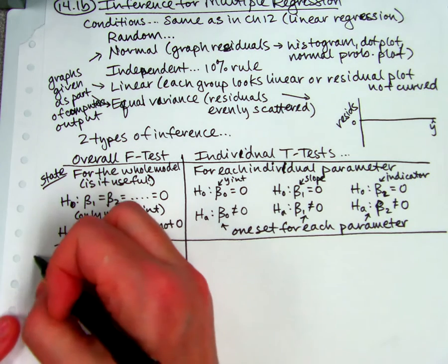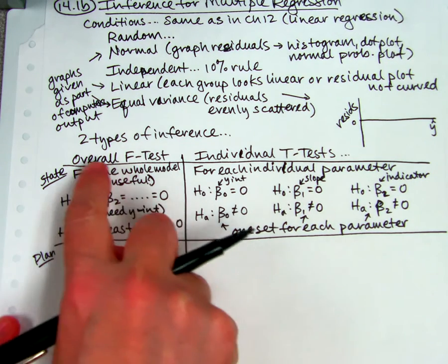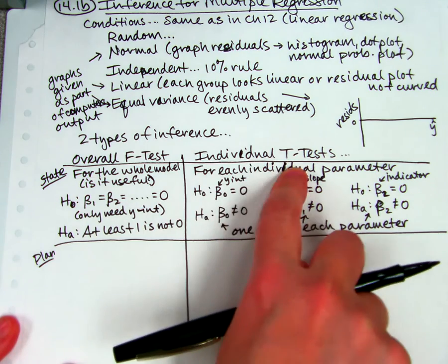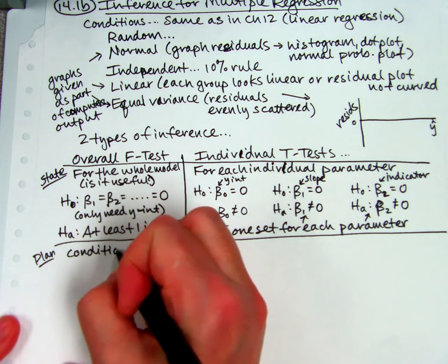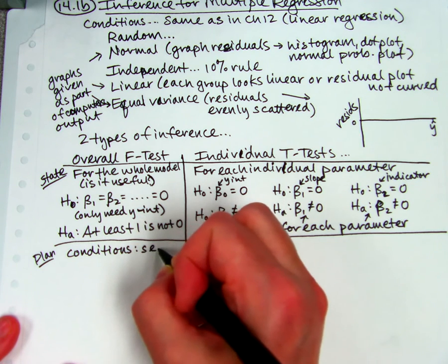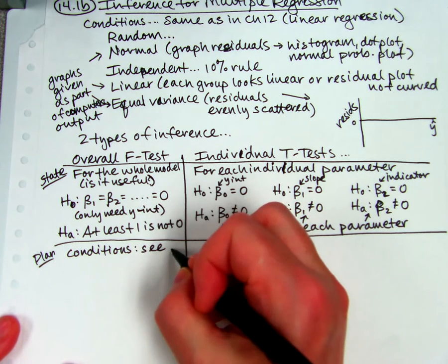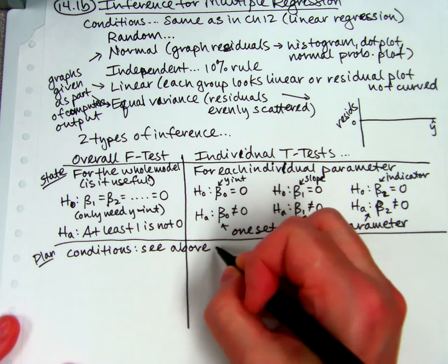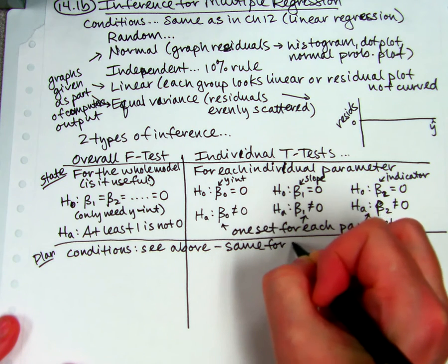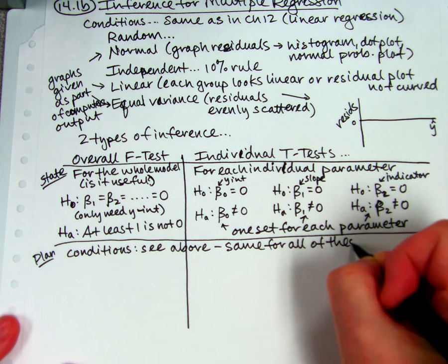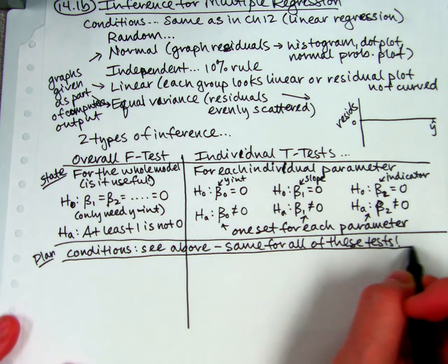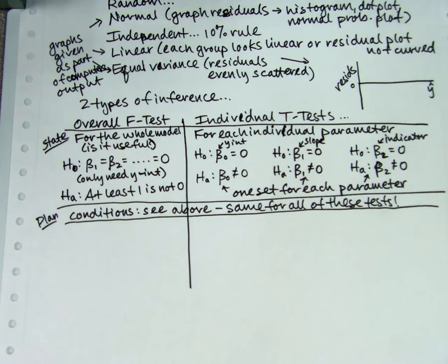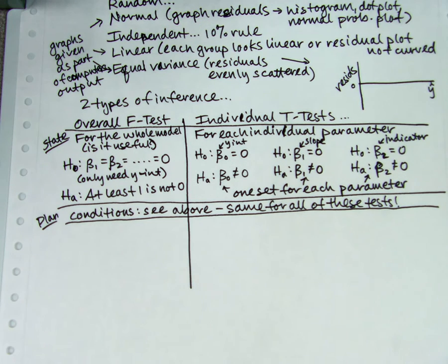Plan. You already know how to do this because I did it up above. The plan is whether you're doing an F test or a individual T test, the name of it, and then C above. Conditions. And what's nice is you can check the conditions once for all of these tests put together. You don't have to check them over and over again. You can just check them once.